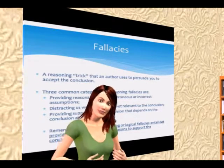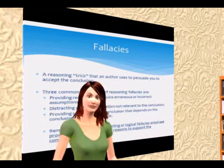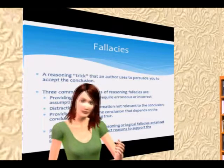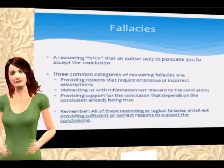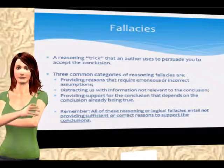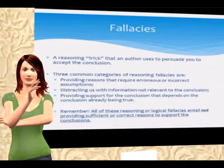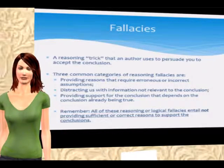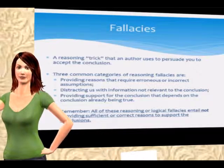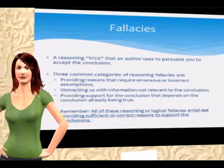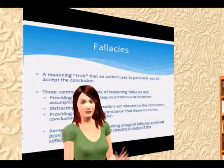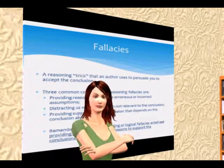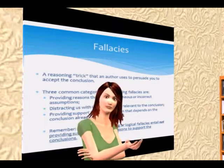In evaluating arguments, we often come across what are called fallacies. Logical fallacies, sometimes called reasoning fallacies, are basically faulty reasoning or a faulty argument. We can also think of them as tricks an author uses to persuade us to accept a conclusion. There are three common categories of reasoning fallacies: providing reasons that require erroneous or incorrect assumptions; distracting us with information not actually relevant to the conclusion; and providing support for the conclusion that depends on the conclusion already being true — often called circular reasoning. What all fallacies have in common is that the author is not providing sufficient or correct reasons to support their conclusions.